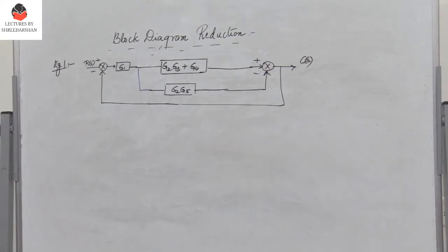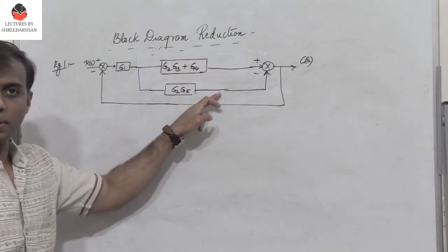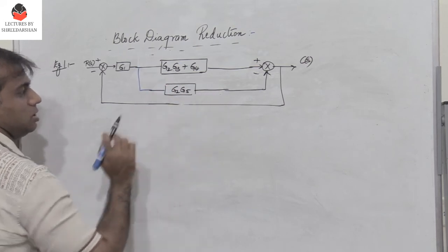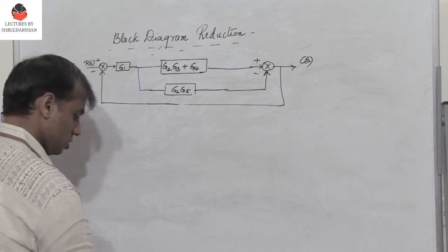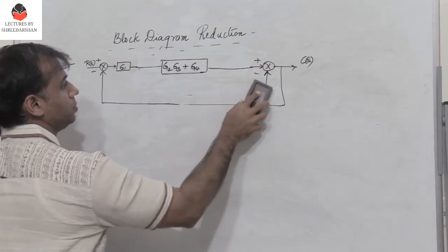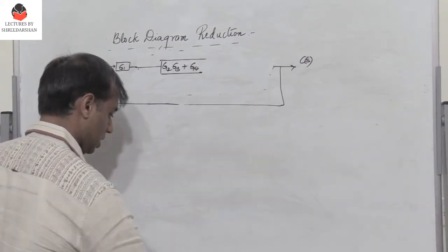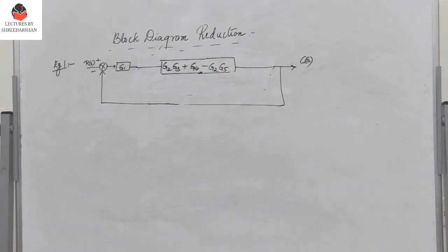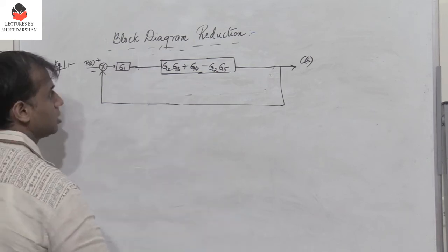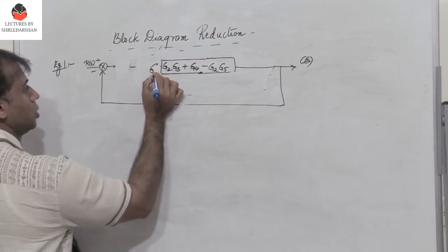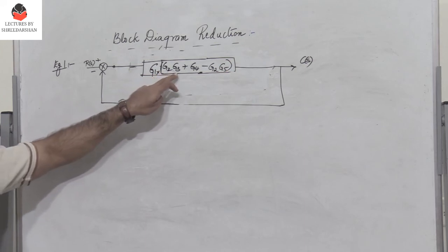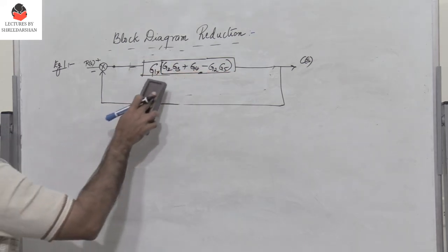Now we have two parallel paths — one giving g2g3 plus g4 and one giving g2g5 — which are added and subtracted respectively, resulting in g2g3 plus g4 minus g2g5. This entire expression is then multiplied with g1, giving g1 into (g2g3 plus g4 minus g2g5).